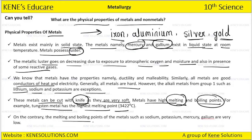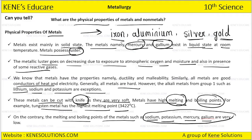On the contrary, metals such as sodium, potassium, mercury, and gallium have very low melting and boiling points. These are exceptional cases — metals generally have high melting and boiling points, but sodium, potassium, mercury, and gallium have very low melting points.